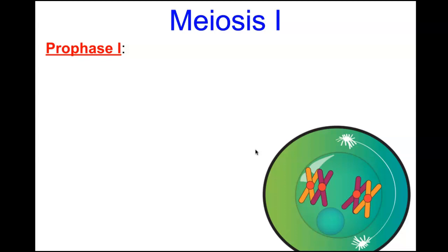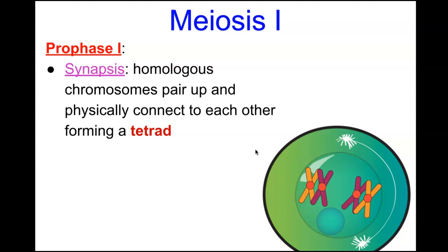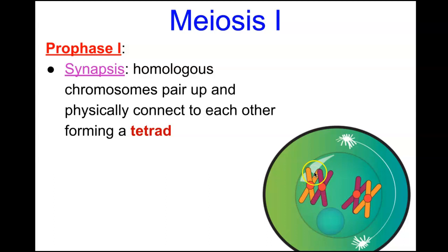In prophase I, homologous chromosome pairs pair up along their synapsis and physically connect, forming a tetrad. Looking at the tetrad, you see the paternal and maternal chromosomes — the inner chromatids of the homologous pairs can wrap around each other during tetrad formation, allowing crossing over to take place.